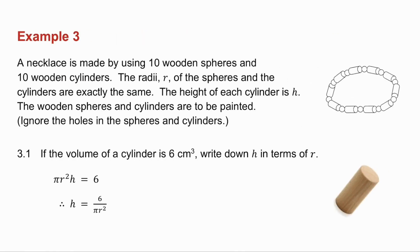The first question says to you that the volume of a cylinder is 6 centimeters cubed, and they want you to write down h in terms of r. Now the volume of a cylinder, the formula is pi r squared h, so that's equal to 6. Make h the subject of the formula, and I get that h is equal to 6 over pi r squared.